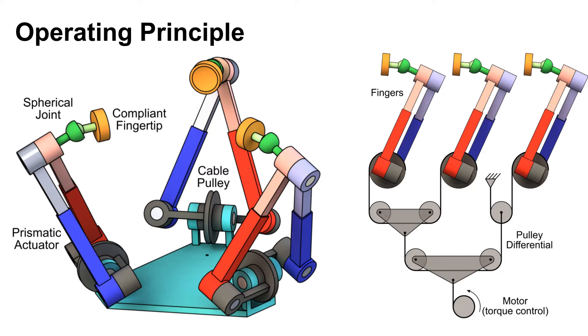Each finger includes an actuated planar linkage with two RPR kinematic chains and a passive spherical joint that allows a compliant fingertip to reorient during object manipulation.